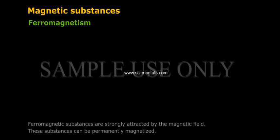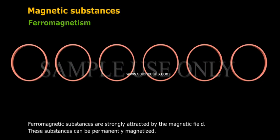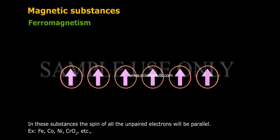Ferromagnetism: Ferromagnetic substances are strongly attracted by the magnetic field. These substances can be permanently magnetized. In these substances the spin of all the unpaired electrons will be parallel. Examples: Fe, Co, Ni, CrO2, etc.